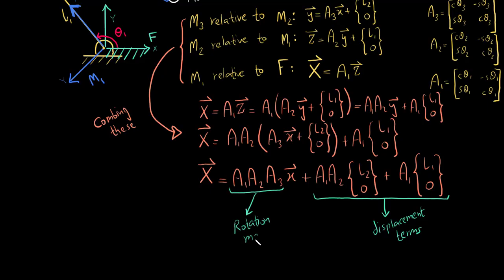The first term gives me the rotation term where a1 times a2 times a3 is the rotation matrix. Once I multiply a1 times a2 times a3, I get a 2 by 2 matrix which has cosine of theta 1 plus theta 2 plus theta 3, sine of theta 1 plus theta 2 plus theta 3, minus sine of theta 1 plus theta 2 plus theta 3.